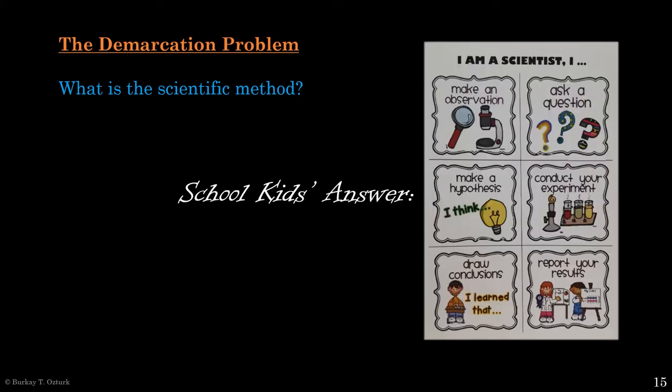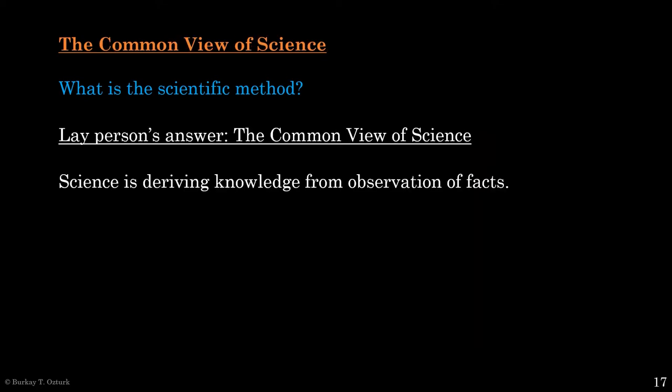Last time we looked at the school kids answer to this question. Science works by following these six easy steps. But I said that these steps are way too vague to distinguish science from other things. So let's graduate from school kids to grown-ups. What would a random adult on the street say how science operates? They would probably say something to the effect that science is the practice of deriving knowledge from observation of facts. We will call this view the common view of science.